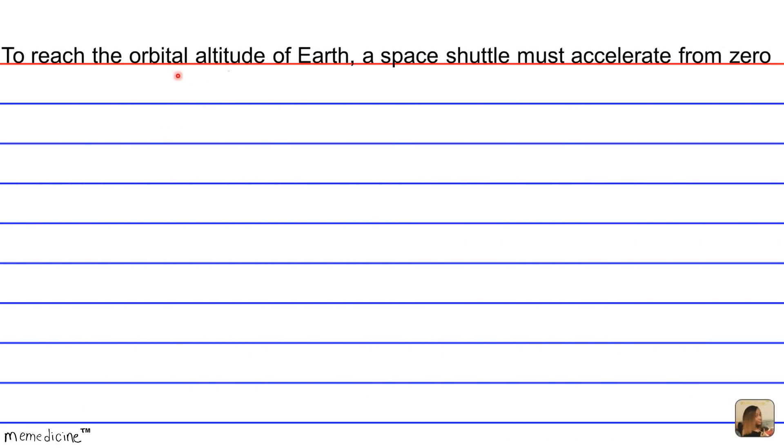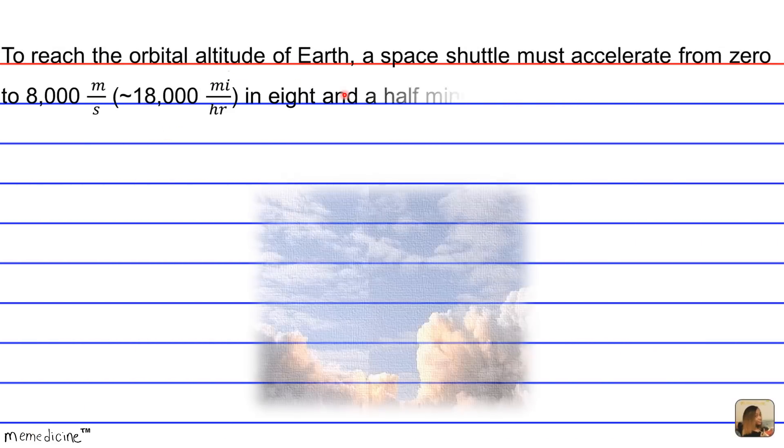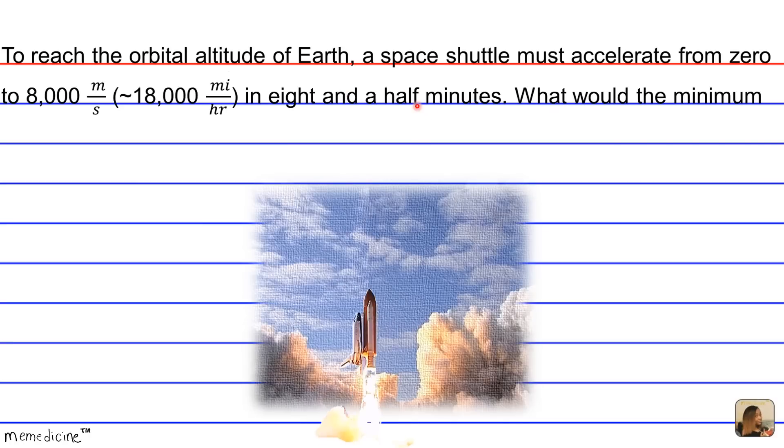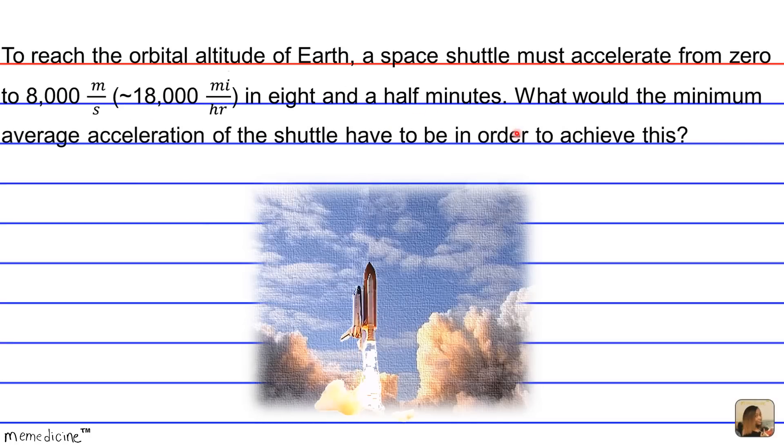To reach the orbital altitude of Earth, a space shuttle must accelerate from 0 to 8,000 meters per second in eight and a half minutes. What would the minimum average acceleration of the shuttle have to be in order to achieve this?